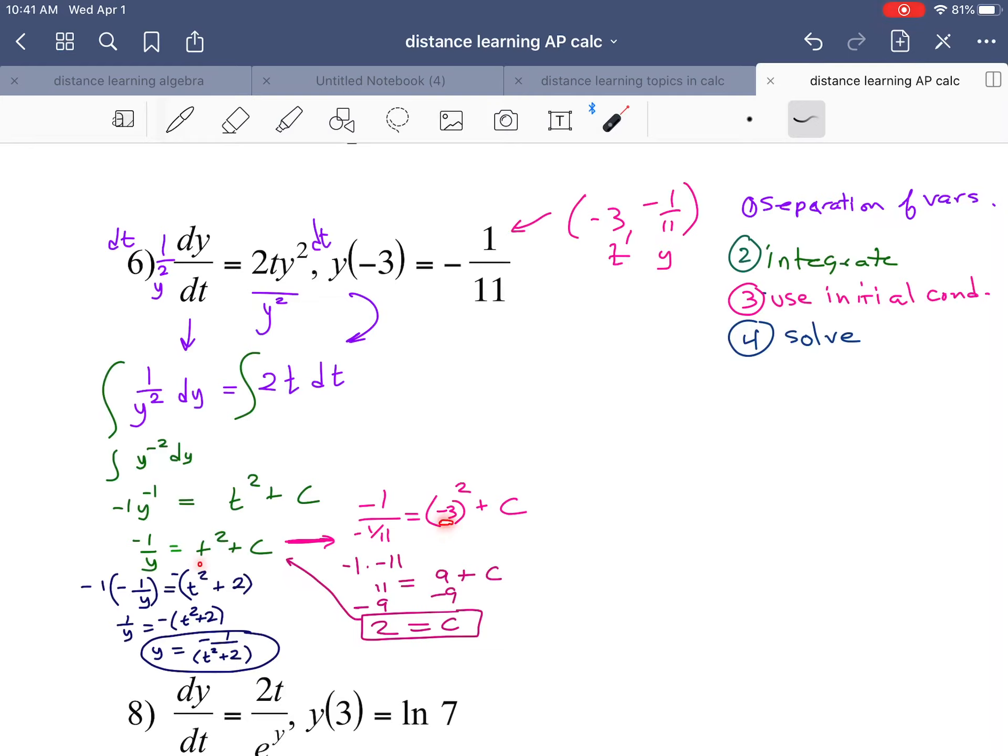So negative 3 squared plus c, and on the other side I have negative 1 over y. My y is negative 1 over 11, so the opposite of 1 divided by the opposite of 1 over 11 ends up being negative 1 times negative 11 or 11. Negative 3 squared plus c, subtract 9, and all of a sudden c is equal to 2.